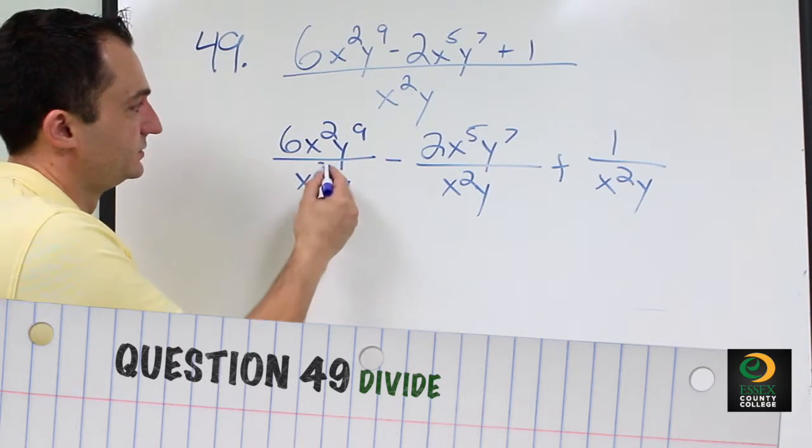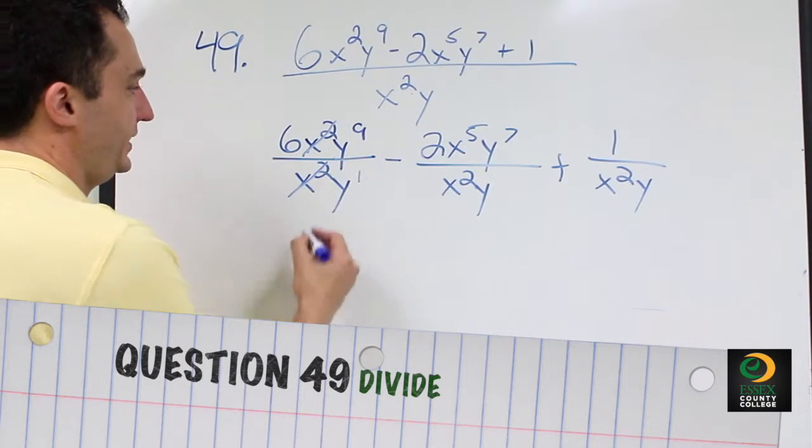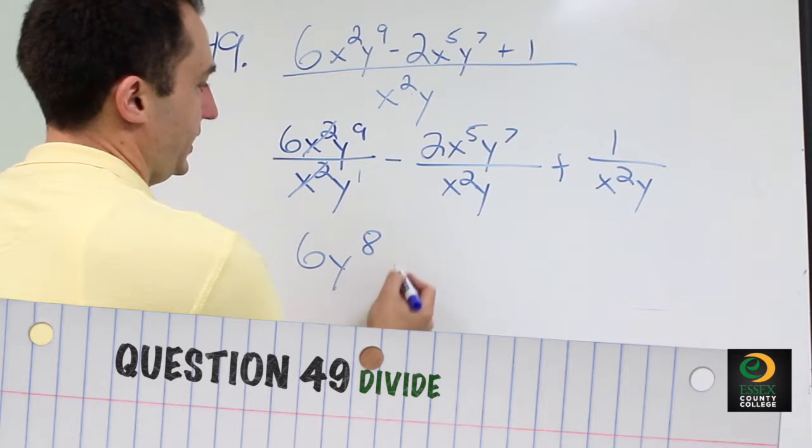2 minus 2 is 0, so those cancel out. Then 9 minus the 1 gives us an 8th, so we're left with 6y to the 8th minus...